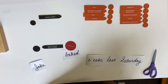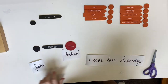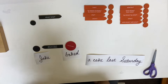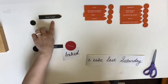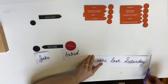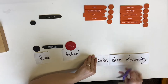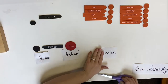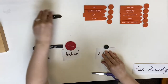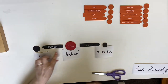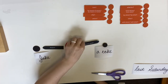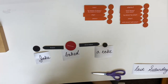Who is it that baked? Jake. Jake baked what? Oh, a cake. So this sentence has a predicate, a subject, and a direct object.